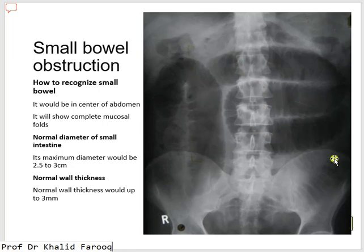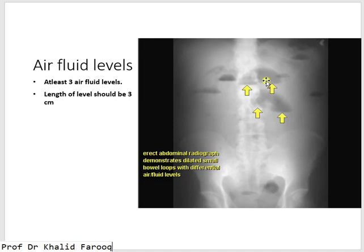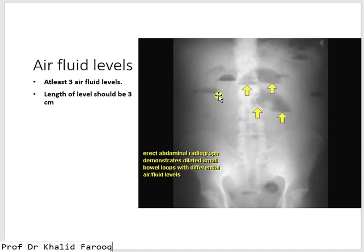On an X-ray of the abdomen in the standing posture, we can see multiple air-fluid levels suggesting obstruction. The criteria state there should be three or more air-fluid levels, and when we measure the length of one level it should be around 3 centimeters. So in standing posture, we will see multiple air-fluid levels. Another example also shows multiple air-fluid levels suggesting obstruction.